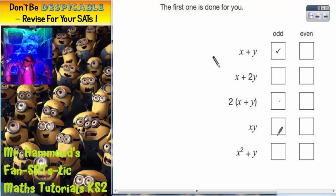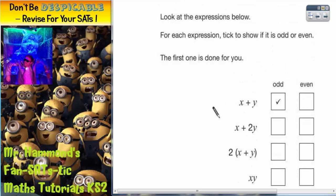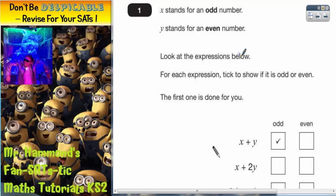We've got to show whether each of these expressions are odd or even. Now what we could do is try and work this out without sticking any numbers in. But the easiest thing to do is actually to pick a number for x and to pick a number for y.